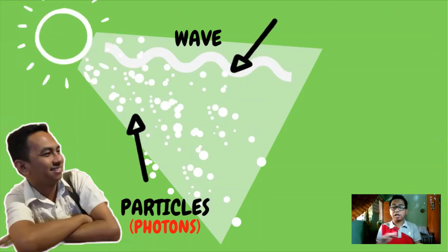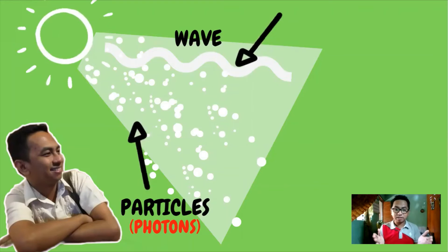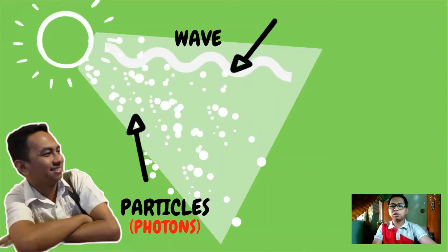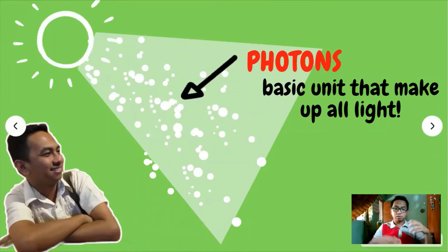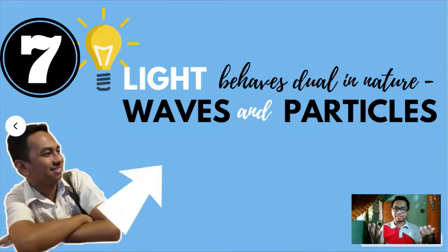Light appears to have a dual nature. During propagation, light exhibits wave characteristics, but when it interacts with matter, it behaves like particles called photons. Photons are the basic unit that makes up all light. For our seventh or last characteristic of light, light behaves dual in nature - waves and particles.